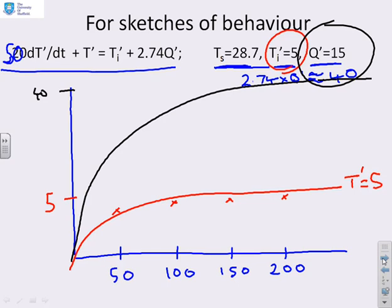And what happens if I get both together? Well, if I get both together, then clearly the steady state is going to go to T' equals 45. I won't add that on because we've run out of space on this particular page.